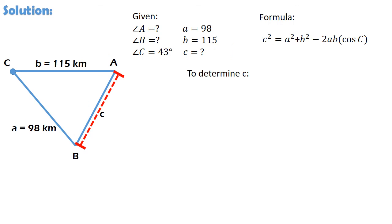To determine c, again, we use the formula c squared is equal to a squared plus b squared minus the product of 2ab cosine C. Next, ay papalitan lang natin yung mga variables sa formula ng mga information galing sa given. Kaya naman, meron tayong c squared is equal to 98 squared plus 115 squared minus the product of 2, 98, 115, and cosine 43.